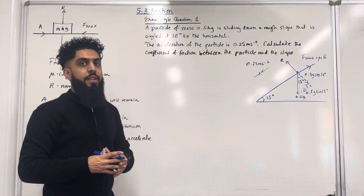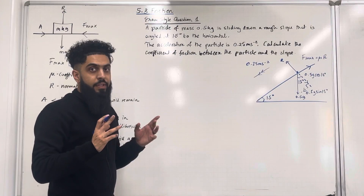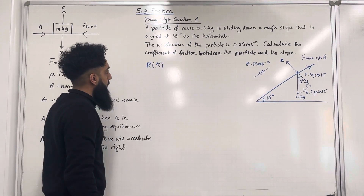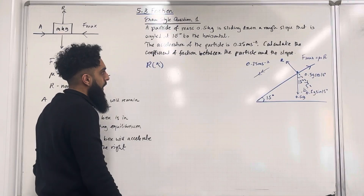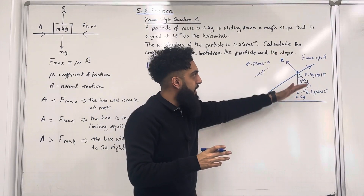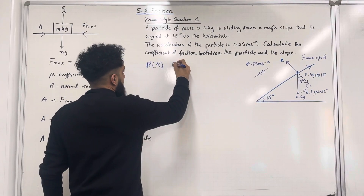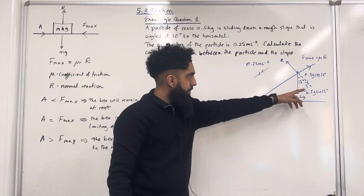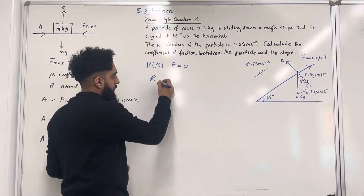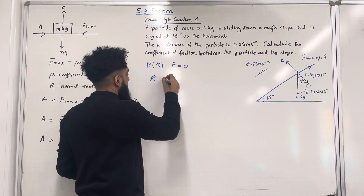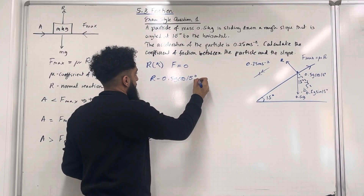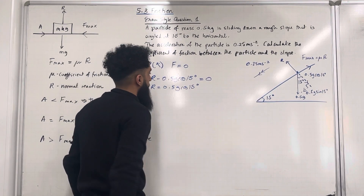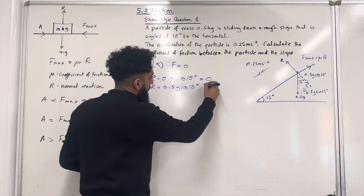To work out mu, we're going to generate simultaneous equations. First, we need to work out the normal reaction. I'm going to resolve perpendicular to the slope, taking upwards to be the positive direction. The particle is not accelerating perpendicular to the slope, so the resultant force F equals 0. This gives us: R minus 0.5g cos 15 equals 0, therefore R equals 0.5g cos 15. That is equation 1.